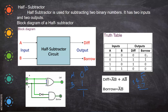When A = 1 and B = 0, you are not borrowing anything because one is bigger, so one minus zero gives difference = 1 and borrow = 0. When both A and B are one, the difference is zero and you are not borrowing anything, so borrow is also zero.